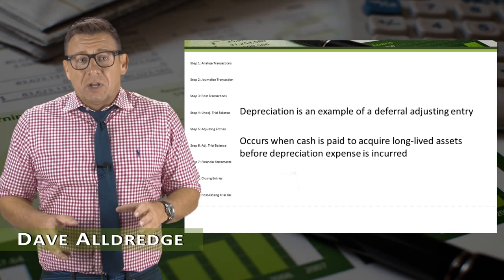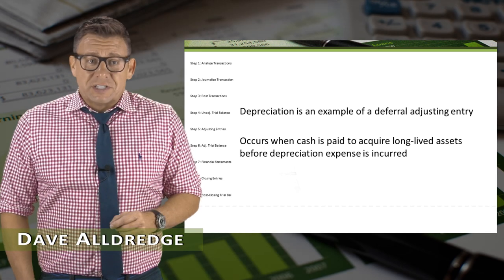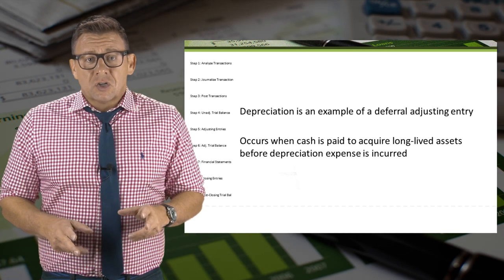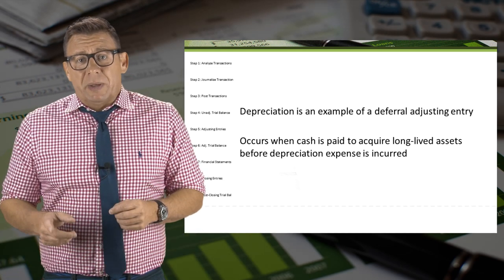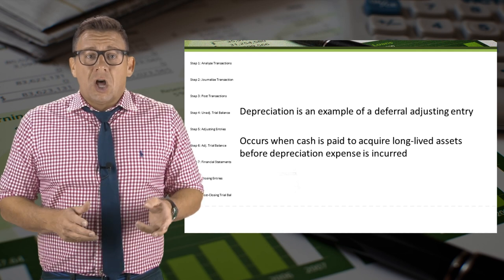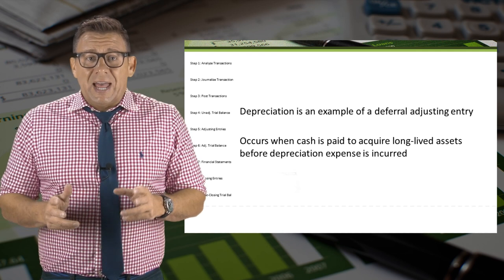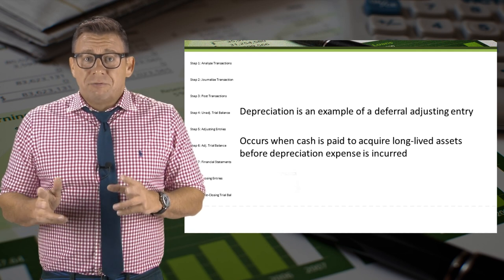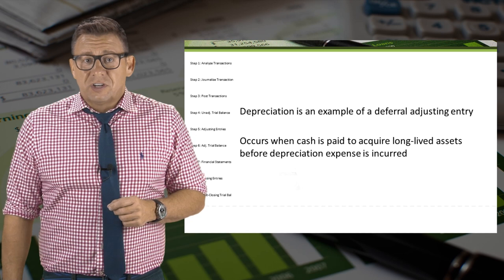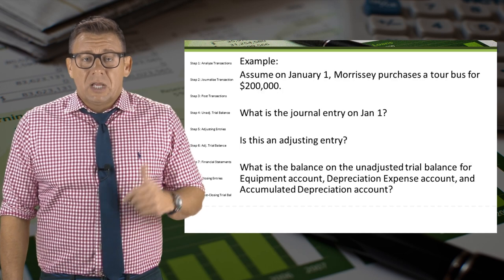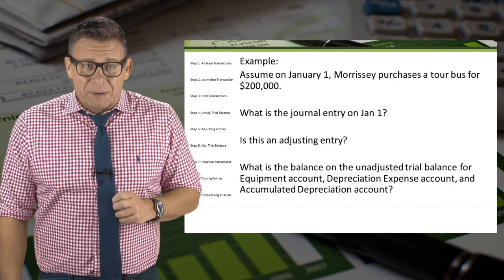Depreciation is an example of a deferral adjusting entry. It occurs when cash is paid to acquire long-lived assets before depreciation expense is incurred. Let's look at this example.